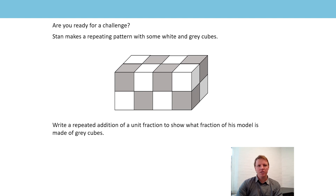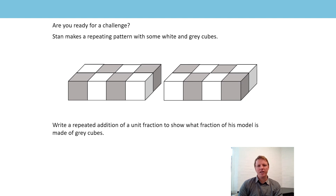Now this question was more challenging. Stan makes a repeating pattern with some white and gray cubes. Write a repeated addition of a unit fraction to show what fraction of his model is made of gray cubes. First we have to work out how many cubes there are in total. I can see the top face and the front face of a gray cube, but that is still just one cube. I'm going to split the whole into the top and bottom layer so you can see all of them. If there are eight cubes in the top layer, there are also eight in the second layer — eight and eight equals 16, so there are 16 cubes altogether.